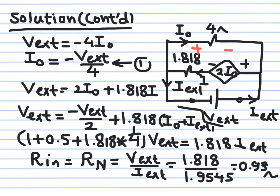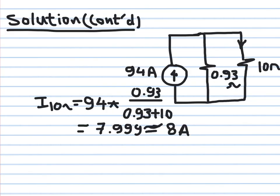Going back to the original circuit: I_Norton = 94 amperes, R_Norton = 0.93 ohm. Constructing the equivalent circuit and connecting the 10 ohm load, using current division: I_load = 94 × 0.93 / (0.93 + 10) ≈ 7.999 amperes. Due to rounding, this is exactly 8 amperes. So 8 amperes flow in the 10 ohm resistor in the circuit we analyzed.